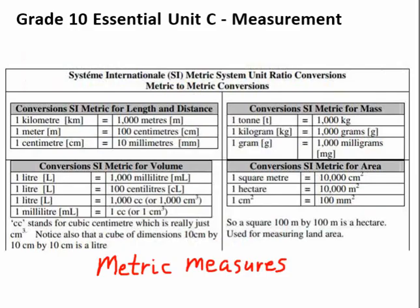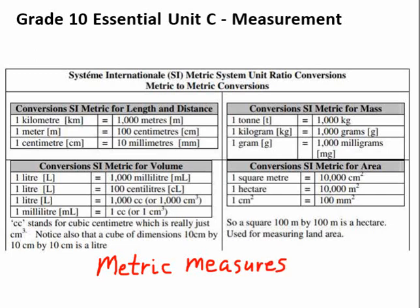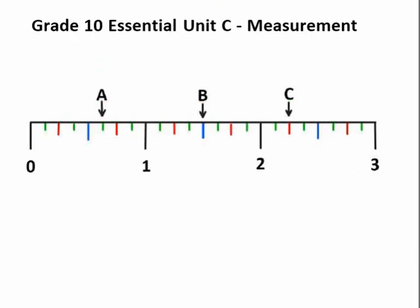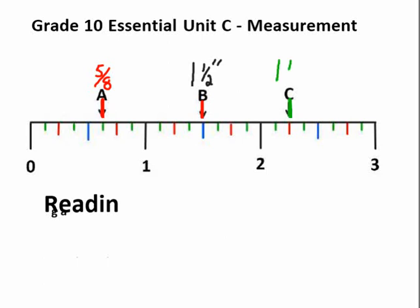Unit C is measurement. Everybody's got to know how measurement works. We use the metric system in Canada. The only people that still use pounds and feet and miles — that's Americans. Hopefully you're familiar with the metric system. We got rid of that old system back in 1973 — almost 50 years ago. But we still need to know how to do it because our neighbors south of us use it. And of course you've got to know how to read a ruler, which involves some fractions.